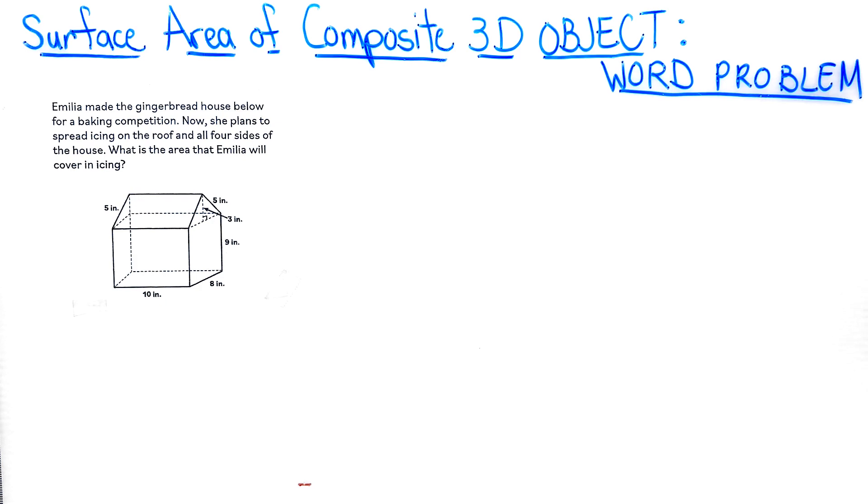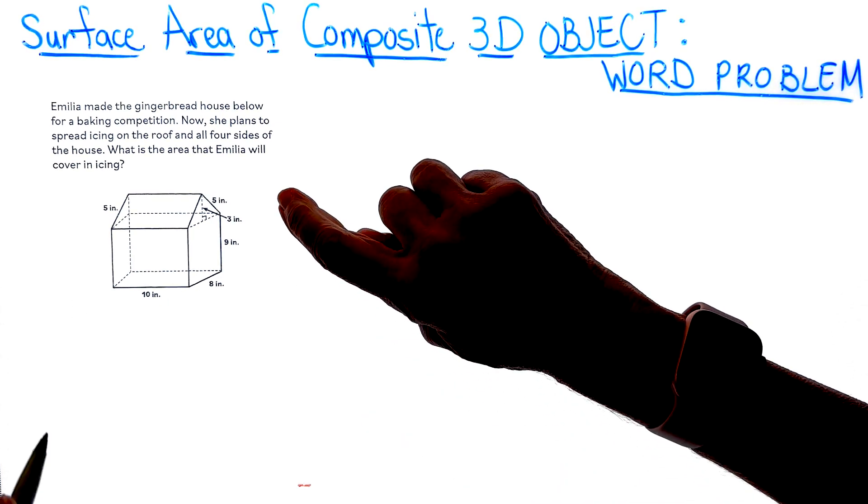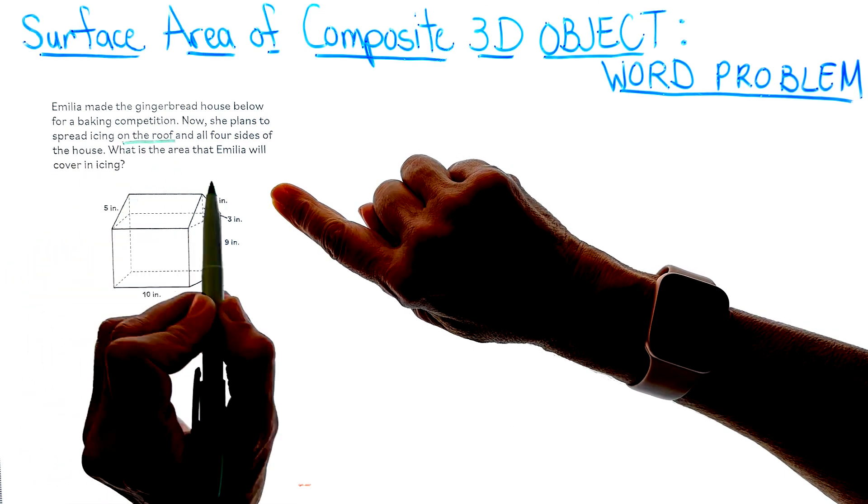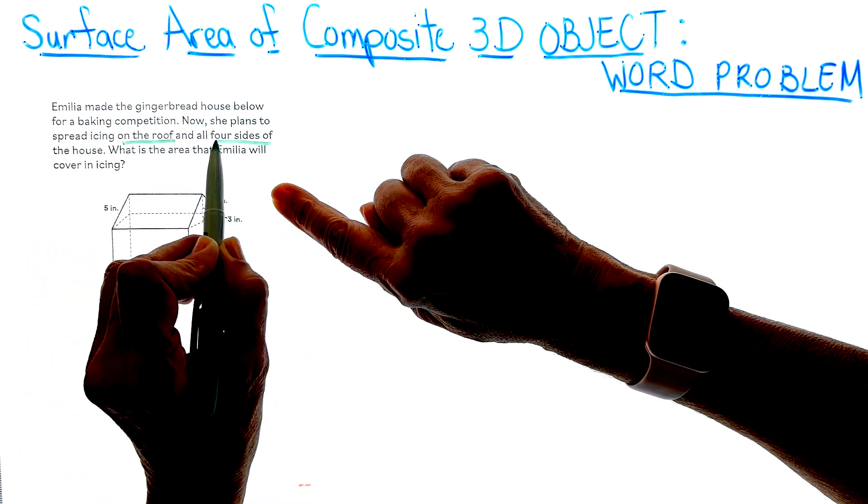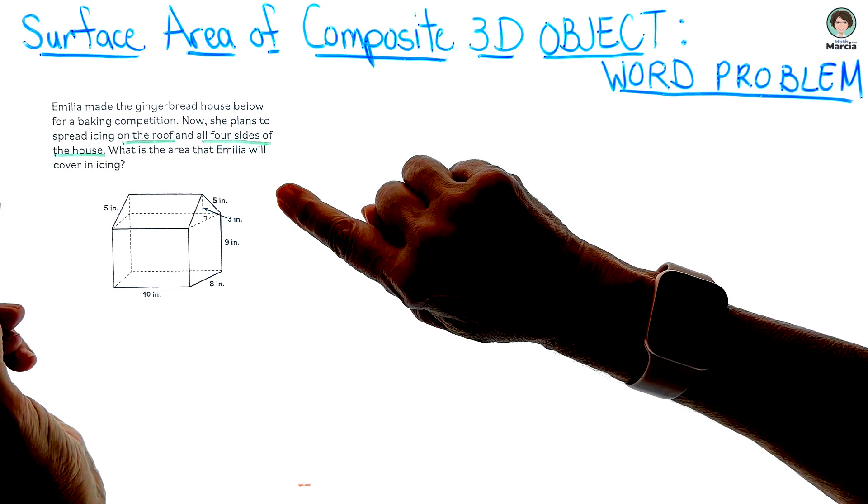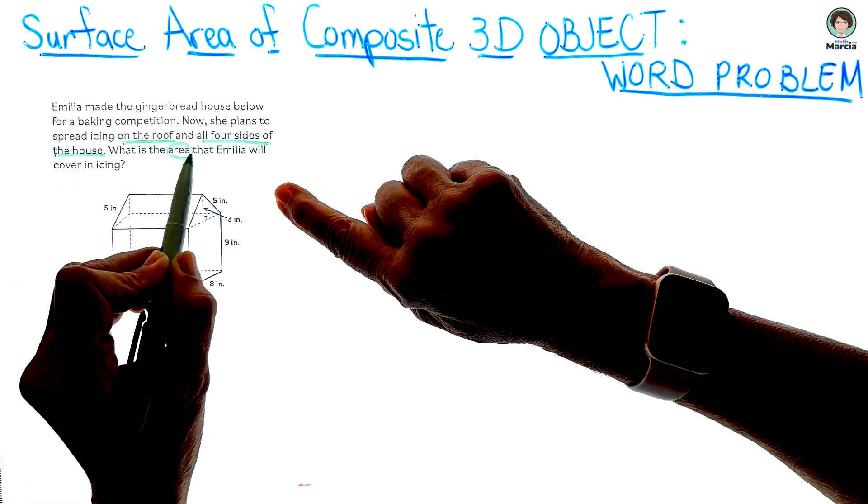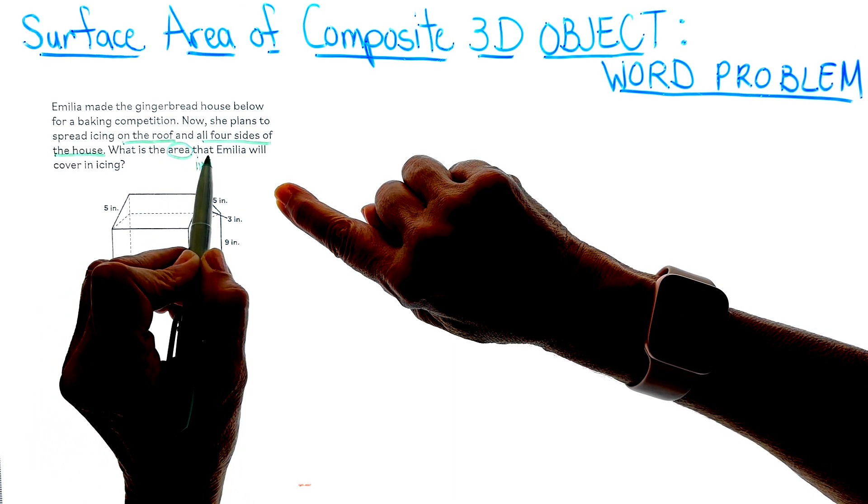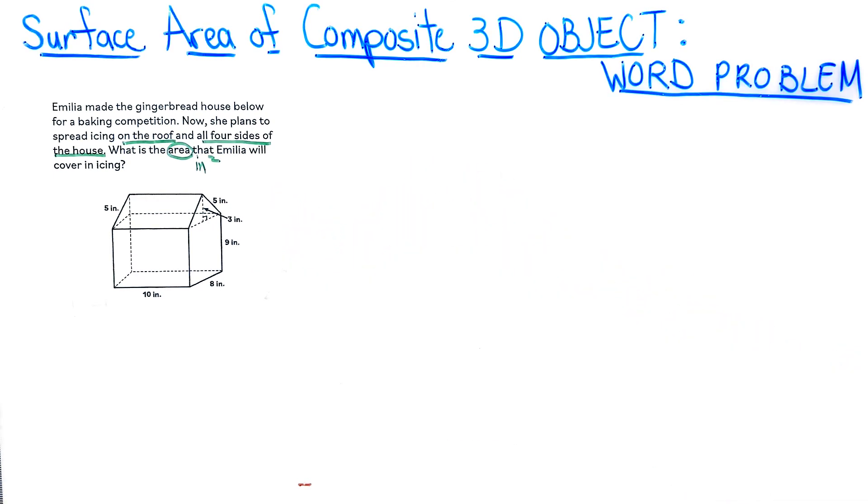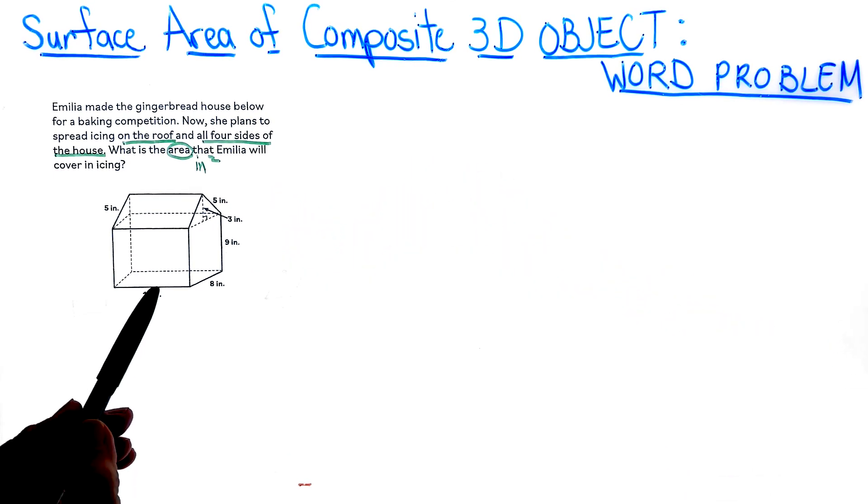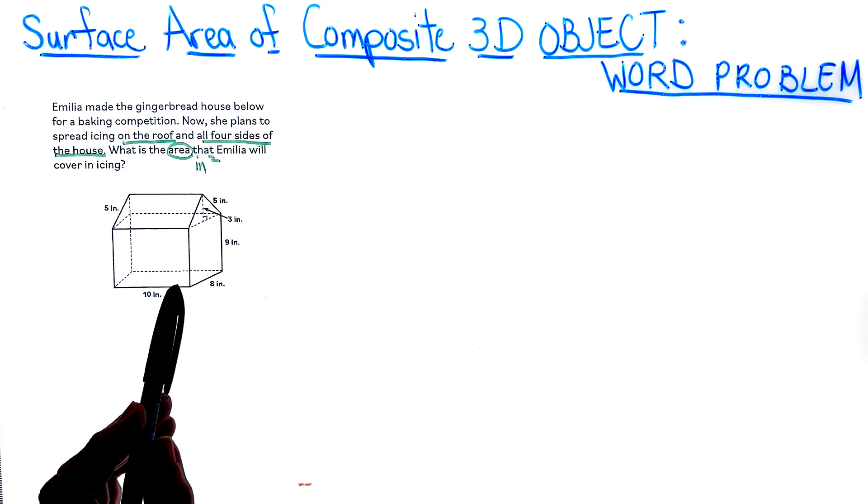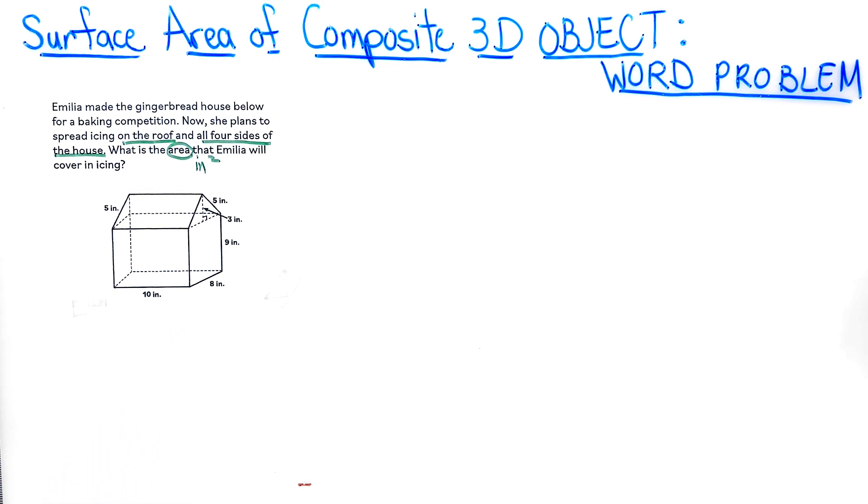So let's go back and mark the text. She made a gingerbread house. She plans to spread the icing on the roof and all four sides of the house. And then of course we're looking for area. So we know our units are going to be in inches squared. That problem is basically telling us that she's going to do all the walls of the house, but this bottom rectangle that we see will not be done because it said all four sides of the house.